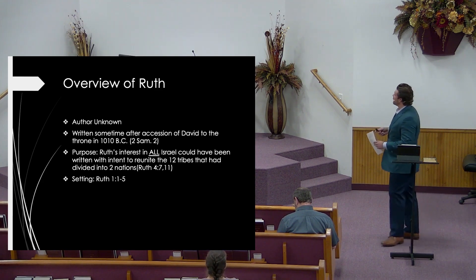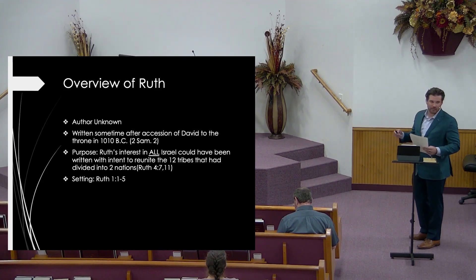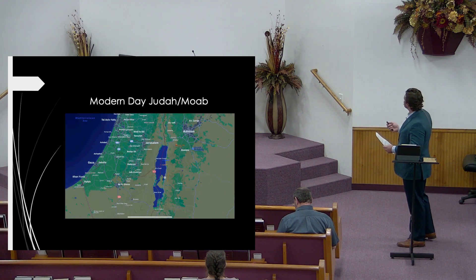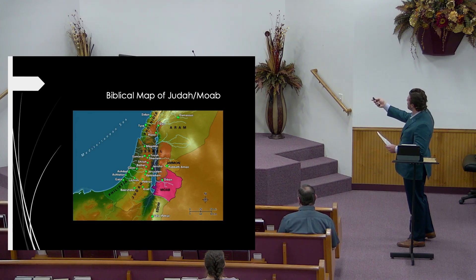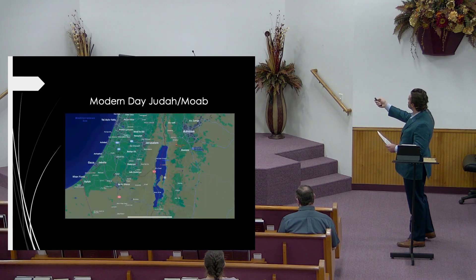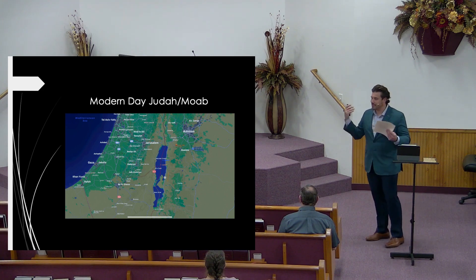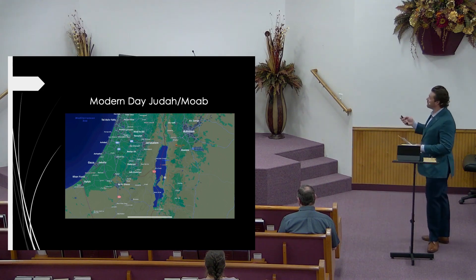As far as the setting goes, I like to look at a map to get context of where this is occurring. This is the modern-day map alongside the biblical map of the time. Here is Moab and here is Bethlehem in Judah. In modern day, the Dead Sea runs between them — this whole area is Jordan now, with Bethlehem being up here in what is Israel. It gives us a general context of where this occurred.